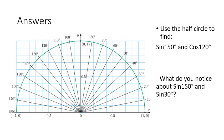If we're looking at our half circle or half unit circle, we need to find sine 150. We go over to 150, we go straight across and we can see that's going to go through 0.5.